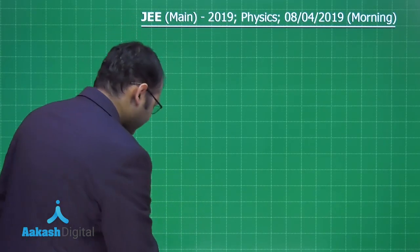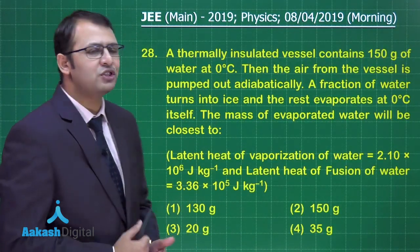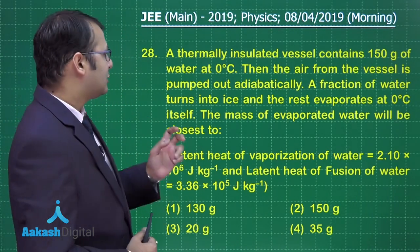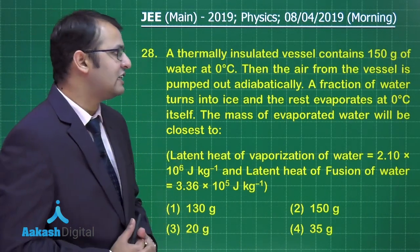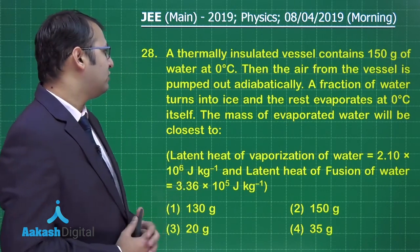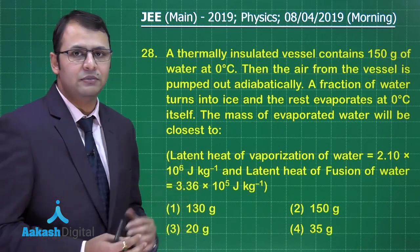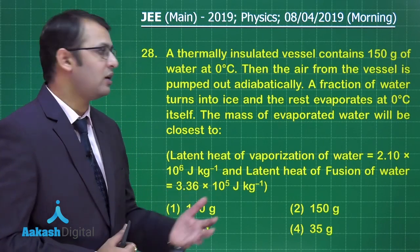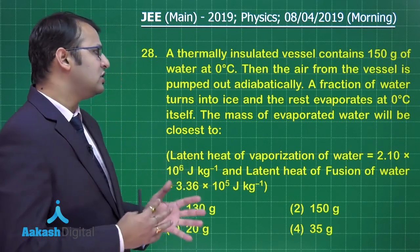Let's start with question number 28. The question belongs to thermodynamics. A thermally insulated vessel contains 150 gram of water at 0 degree centigrade. Then the air from vessel is pumped out adiabatically, that means there's no heat exchange from the surroundings. A fraction of water turns into ice and the rest evaporates.